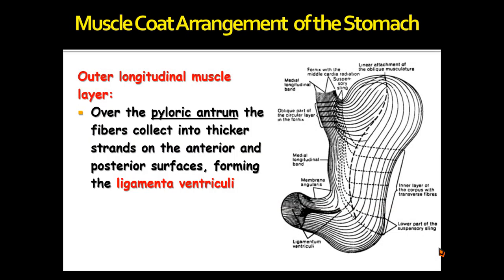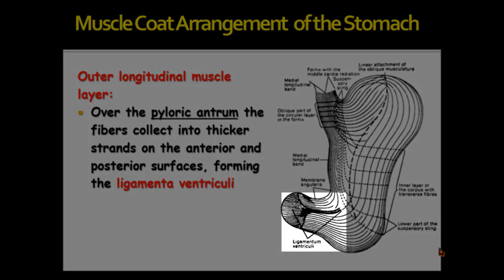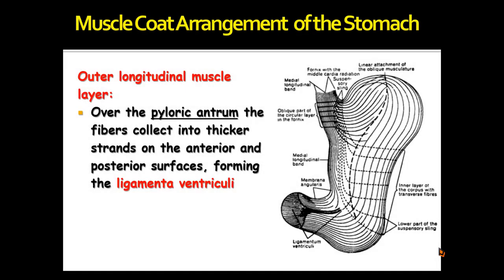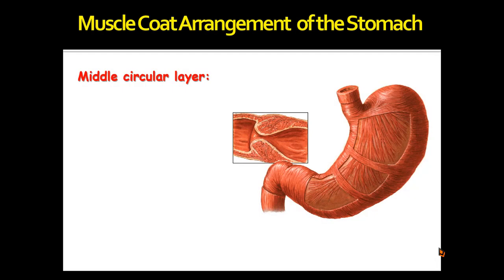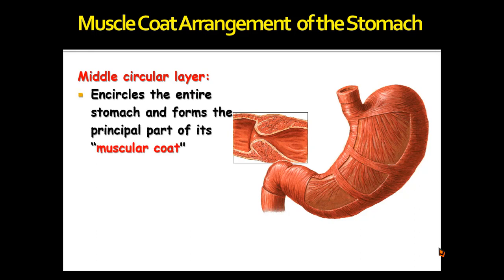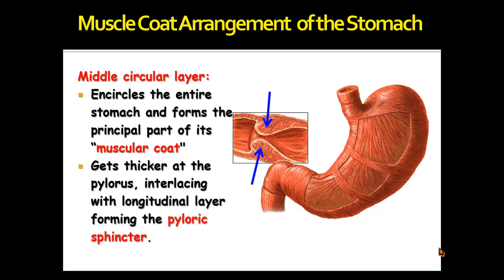Over the pyloric antrum, the fibers collect into thicker strands on the anterior and posterior surfaces, forming the ligamenta ventriculae. Then we have the circular muscle layer — the middle circular layer — which encircles the entire stomach and forms the principal part of its muscular coat. It gets thicker at the pylorus, interlacing with the longitudinal layer to form the pyloric sphincter.